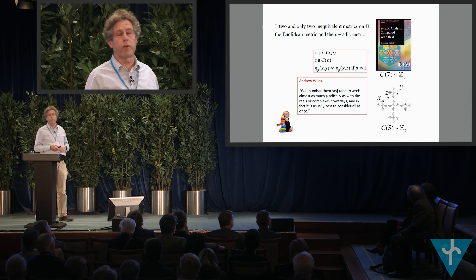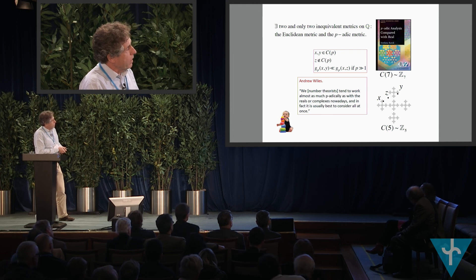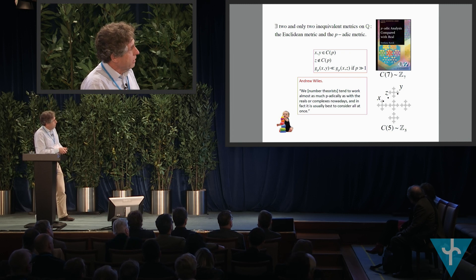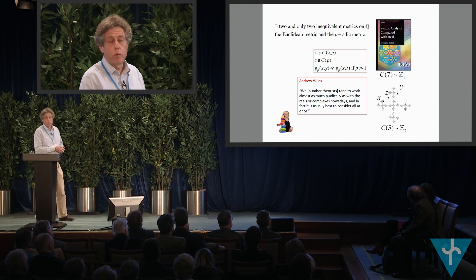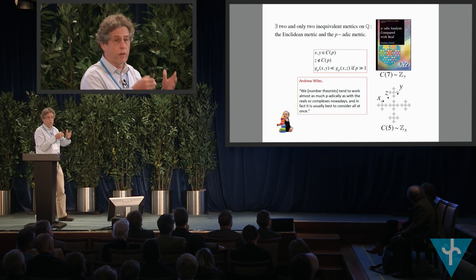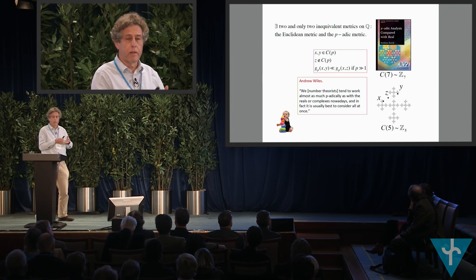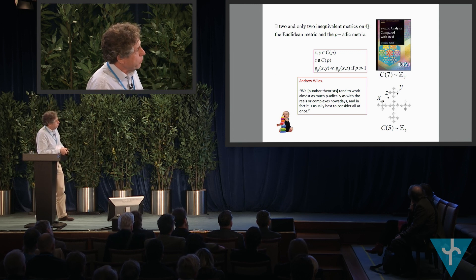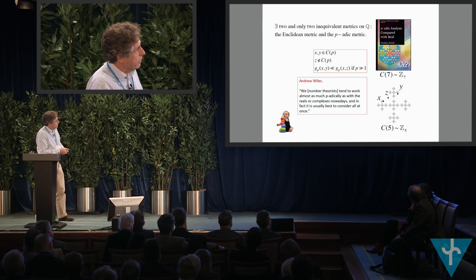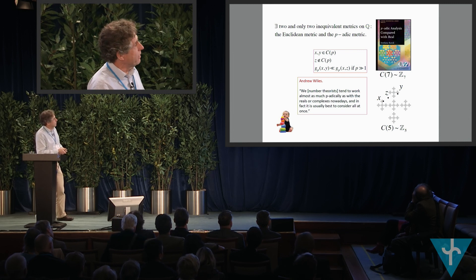The crucial point about the p-adic metric — and how it differs from the Euclidean metric — is that it respects the primacy of this Cantor set structure. In particular, the distance between a point x and a point y, both of which lie on the Cantor set, is smaller than the distance between x and a point z which does not lie on the Cantor set. This discrepancy in distance gets bigger as p gets larger. If you construct a Cantor set based on p iterated pieces, the distance between z and x would be at least p times larger than the distance between x and y.